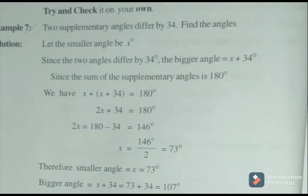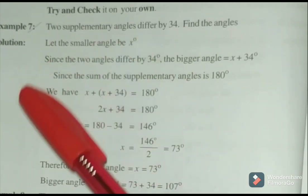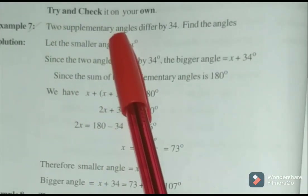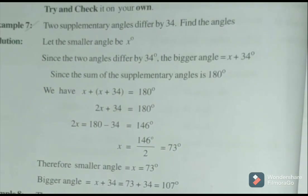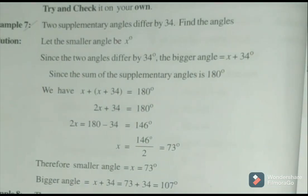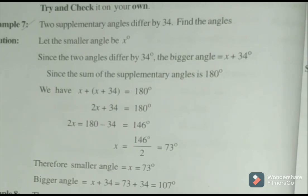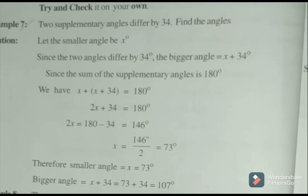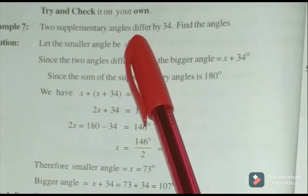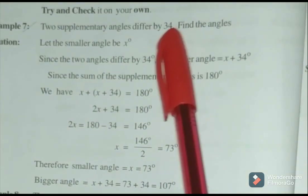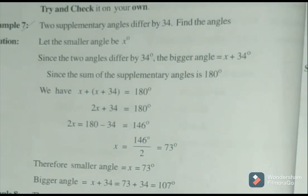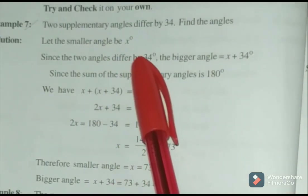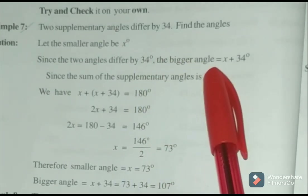Next example: Two angles are supplementary, meaning their sum is equal to 180 degrees, and the angles differ by 34. Let the smaller angle be X. Then the bigger angle is X plus 34.